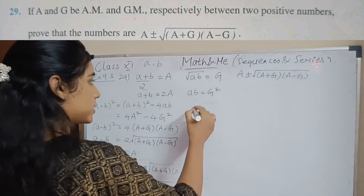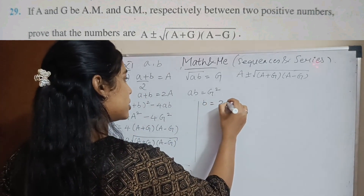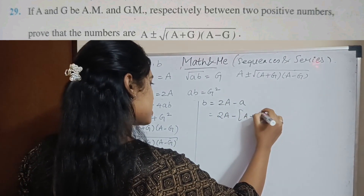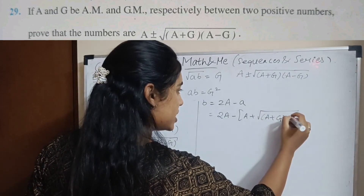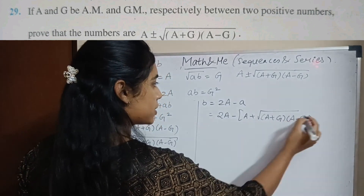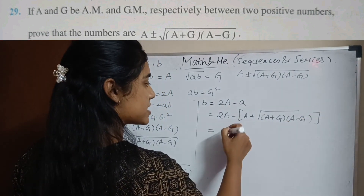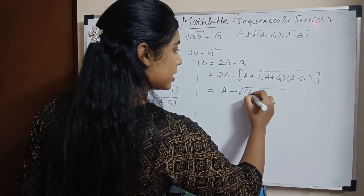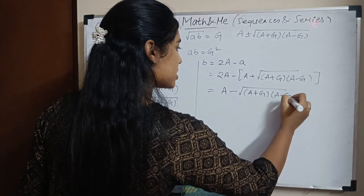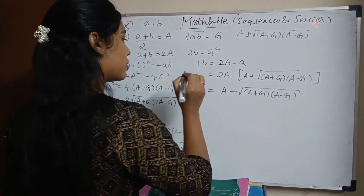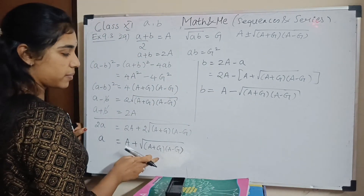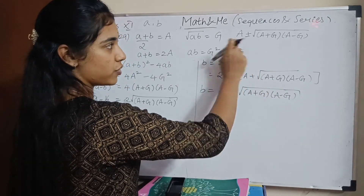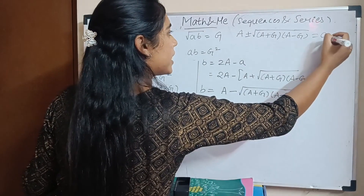Substituting the value of a into the equation, b equals 2A minus a, which is 2A minus [A plus root of (A+G)(A-G)]. Opening the bracket gives 2A minus A minus root of (A+G)(A-G), which is A minus root of (A+G)(A-G). So a equals A plus root of (A+G)(A-G) and b equals A minus root of (A+G)(A-G). Hence proved.